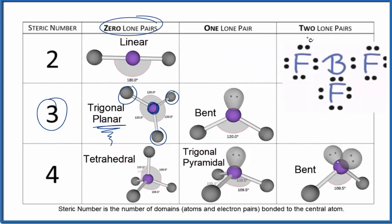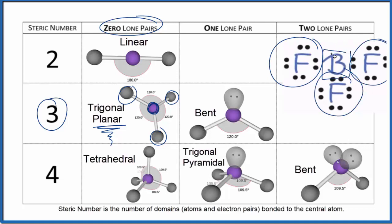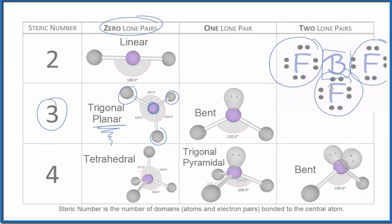When we look at BF3, we see we have one, two, three atoms bonded to this central boron atom, but we don't have any lone pairs on the boron atom, so it's trigonal planar. Let's look at this in three dimensions to help us really see that. We have our boron — the purple — that'll be our central boron atom.